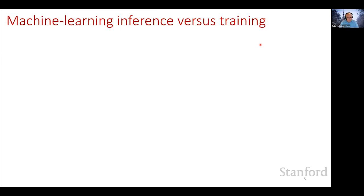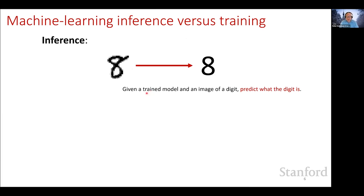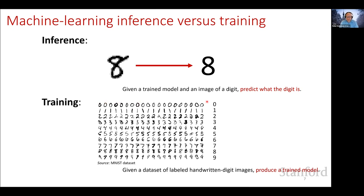I want to briefly emphasize the difference between inference and training in neural networks, because we're focusing on inference. Inference is the task of, given some trained machine learning model and an image of a handwritten digit, making a prediction of what that image is. This is as opposed to training, where you're given a labeled dataset and produce a trained model. That trained model is then used during inference.